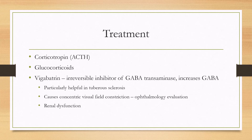Treatments for infantile spasms: the preferred treatment is corticotropin or ACTH. However, it is very expensive, and so in some hospitals they use glucocorticoids as the main line treatment. Vigabatrin is specifically very helpful in tuberous sclerosis. It is an irreversible inhibitor of GABA transaminase, which means that it increases GABA in the central nervous system. When starting it, know that it can cause some concentric visual field constriction, so ophthalmology evaluation is normally needed. It can also cause renal dysfunction.